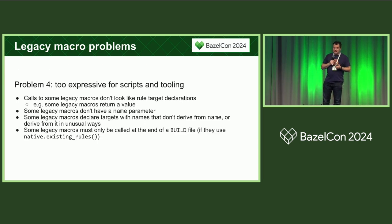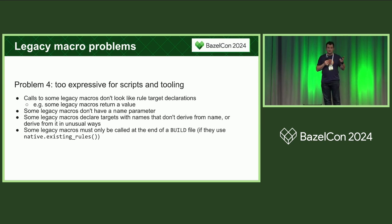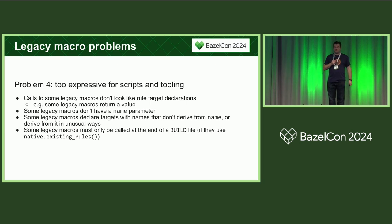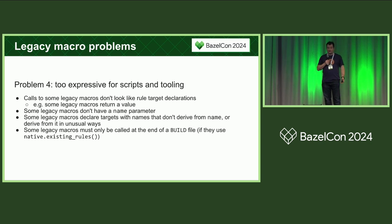Finally, because legacy macros are very flexible and expressive, they can confuse maintenance tools and scripts for your repo. Those tools might expect a build file that looks like a sequence of rule declarations, at least syntactically. But some macros don't look like rule declarations — they might return a value, or not have a name parameter, or declare targets whose names don't derive from the name parameter in strange ways. And there are legacy macros whose behavior depends on their lexical position in the build file, for example if they call native.existing_rules.